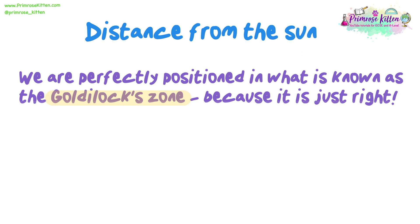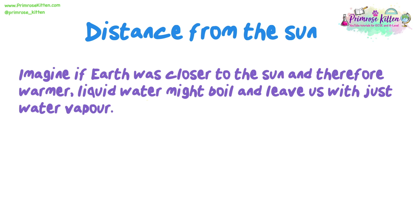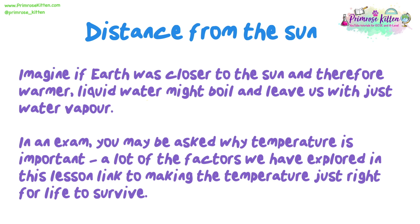We are perfectly positioned in what is known as the Goldilocks zone. This is because it is just right — not too close to the sun and not too far away — so suitable temperature ranges are maintained that life can thrive in, and liquid water is present. Imagine if earth was closer to the sun and therefore warmer; liquid water might boil and leave us with just water vapour. In an exam, you may be asked why temperature is important. A lot of the factors we have explored in this lesson link to making the temperature just right for life to survive.